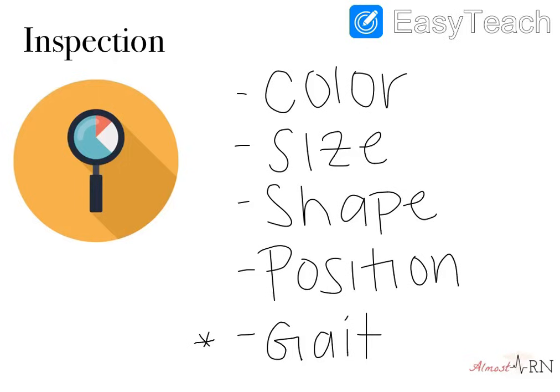I also have down here gait. Gait is just the way that somebody walks. So just through inspection, through looking at something, you can be able to tell if somebody's gait is off or if it's abnormal. Basically for inspection, you're just kind of looking — getting a gauge for what you're about to assess. Is it normal or is it abnormal?